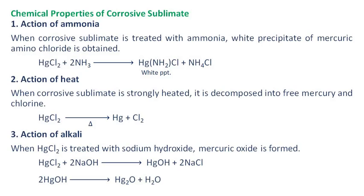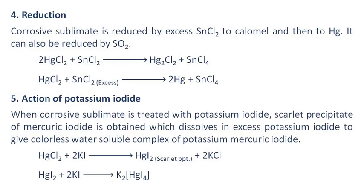Action of alkali: When corrosive sublimate is treated with sodium hydroxide, mercuric oxide is formed. Reduction: Corrosive sublimate is reduced by excess stannous chloride to calomel and then to mercury. It can also be reduced by sulfur dioxide.